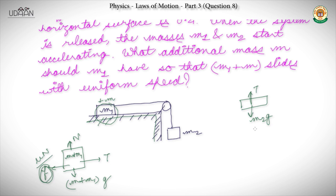Because it is uniform speed, we take tension equal to the net force. And by vertical equilibrium of the horizontal block, N equals (M + M1)·g. We have made free body diagrams for both bodies independently and equated the forces using the given conditions.